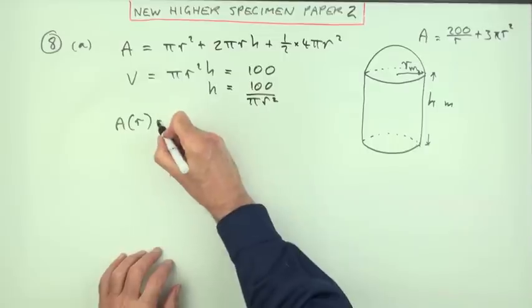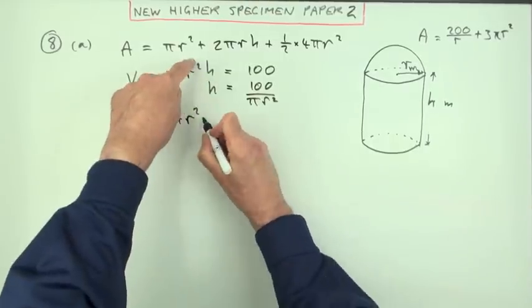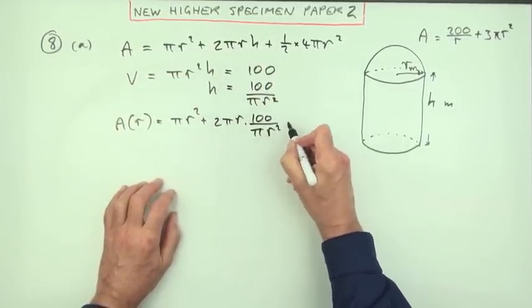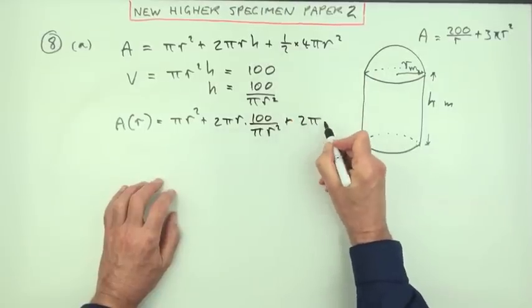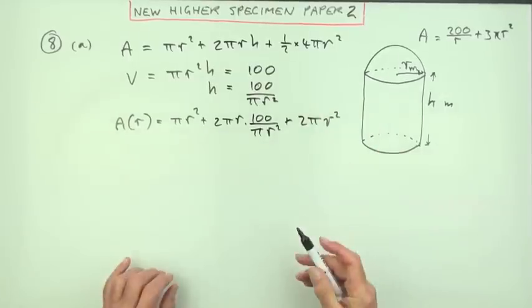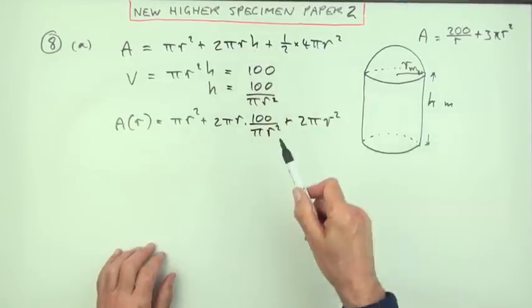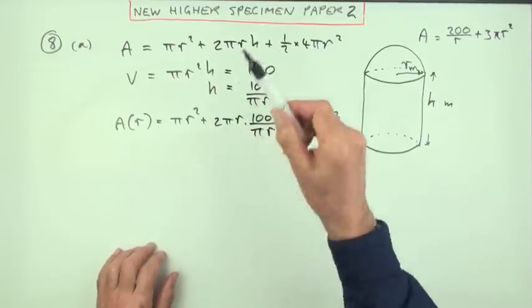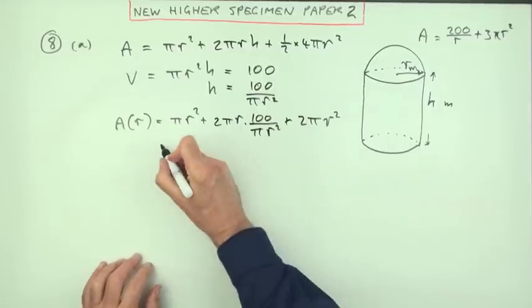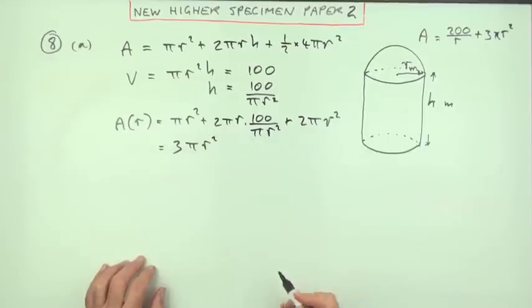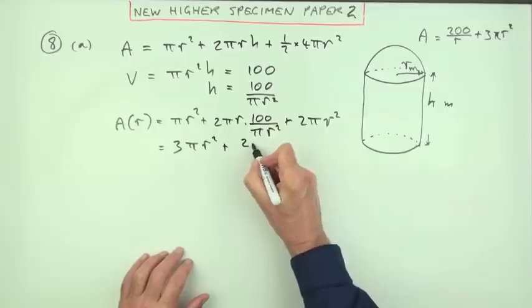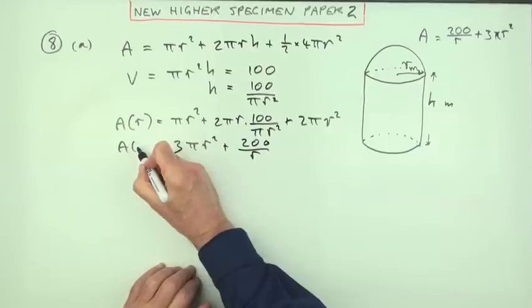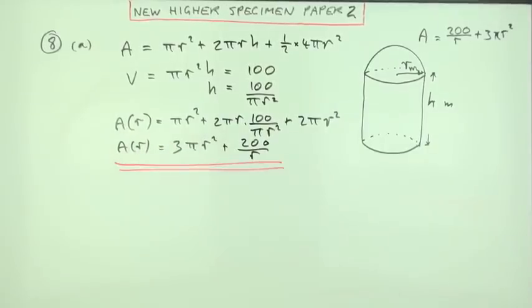That can then replace this H, so now A can be expressed as a function solely of R alone. That would be pi R squared plus 2 pi R times 100 over pi R squared plus 2 pi R squared. Now just tidy this up: those two together make 3 pi R squared. The 2 times 100 makes 200, the pi cancels, and one R cancels, leaving 200 over R. So there's your expression. That wasn't too bad.